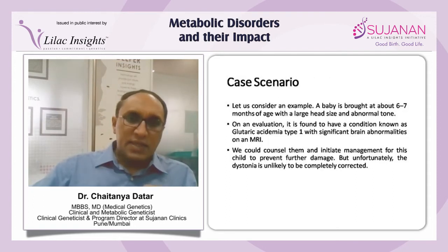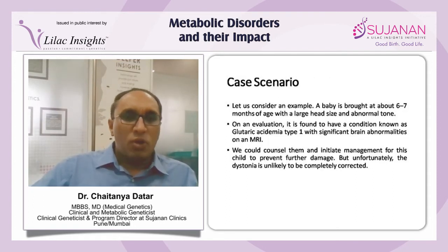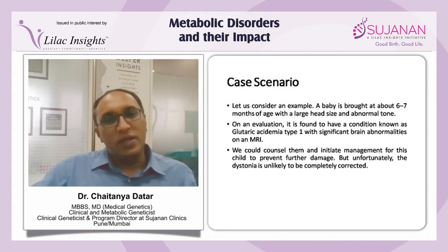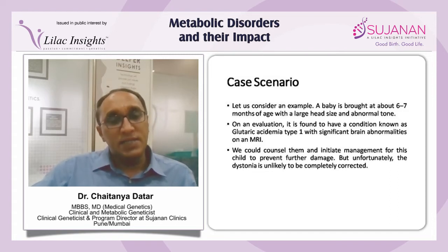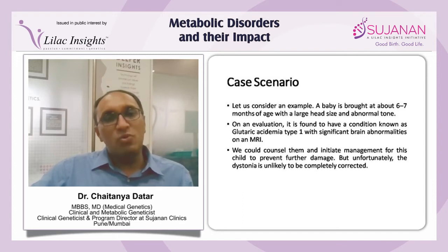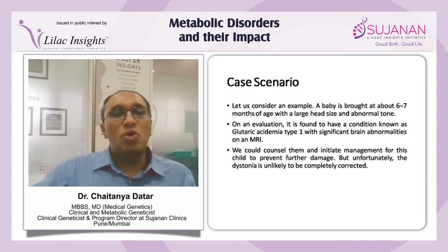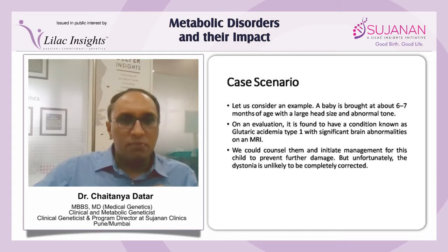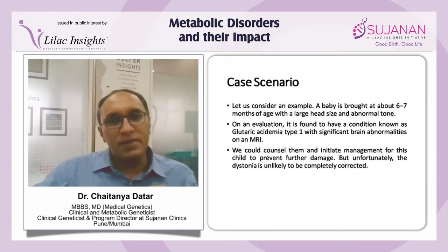Let us consider an example. A baby who is brought in at around 6 to 7 months of age with a relatively large head size and abnormal tone was found on evaluation to have a condition called glutaric acidemia type 1, with significant brain abnormalities on an MRI.